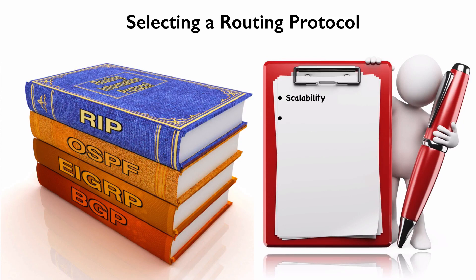Another criterion we might consider is vendor interoperability. Do you have an all-Cisco shop, or do you have third-party routers that need to integrate with your Cisco routers? The answer to that question a few years ago might have been a deal breaker for EIGRP, because for many years EIGRP — enhanced interior gateway routing protocol — was a Cisco proprietary protocol. But in early 2013, Cisco announced they would release EIGRP to the IETF standards body as an informational RFC, meaning other vendors can integrate EIGRP into their hardware. So EIGRP is not necessarily off-limits to a multi-vendor environment.